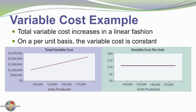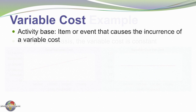Graphically, I've plotted on the left the total variable cost, which rises as production increases. On the right, we see variable cost per unit, which is constant at $11 per unit.